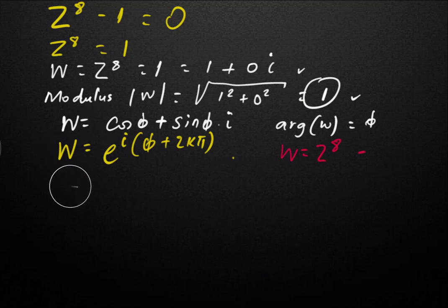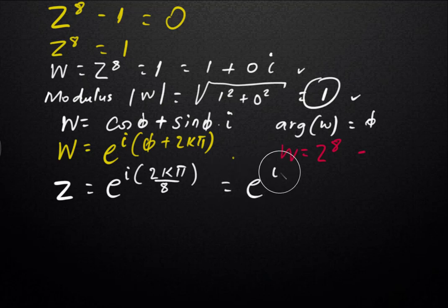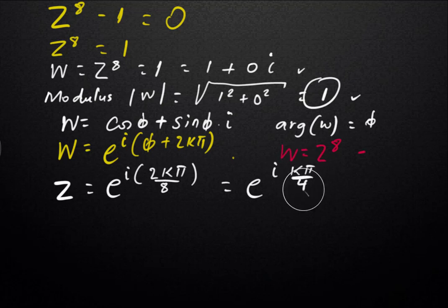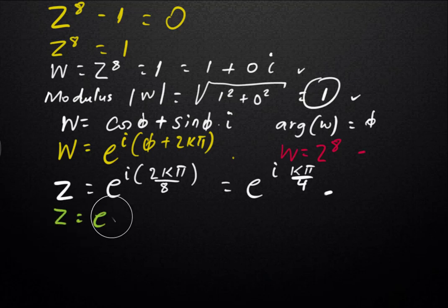To find z, we have eight possible values, so we change k from 0 to 7. We get z is equal to e to the power of i times 2kπ over 8, which simplifies to e to the power of i times kπ over 4. We make k change from 0 to n−1, that is 0 to 7, and we will find 8 roots this way.